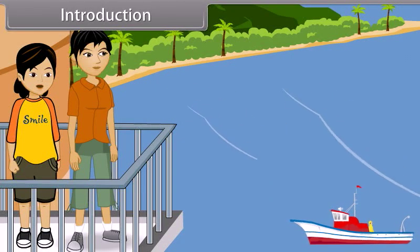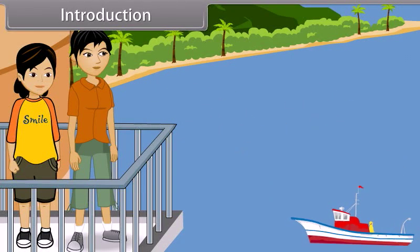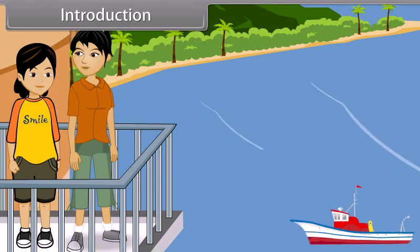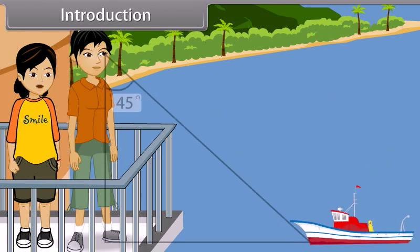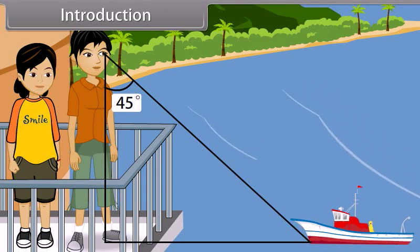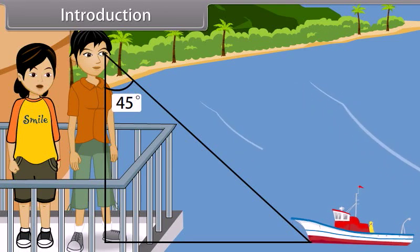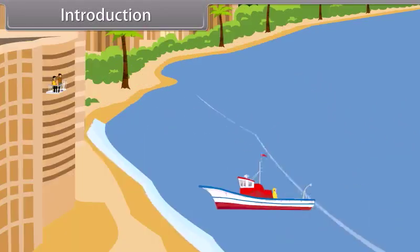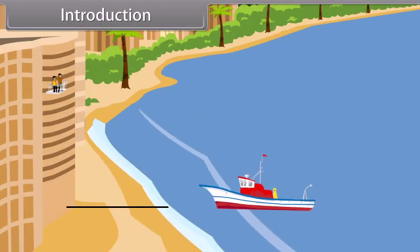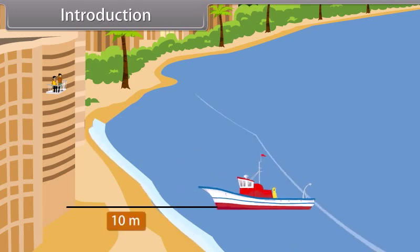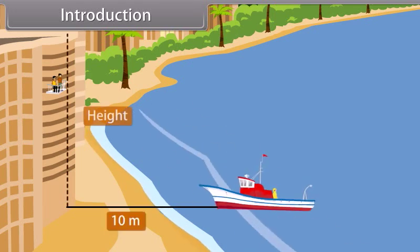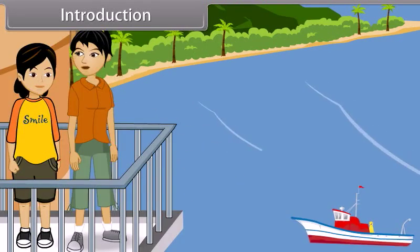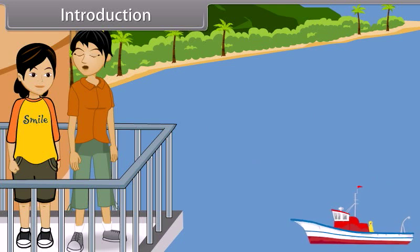Anvesha, are you looking at the ship? Yes, it is such a beautiful sight, see? You are right. Do you realize that your line of sight forms an angle of 45 degrees with the ground? You are right, Vedika. If I told you that the distance between our building and the ship is 10 meters, can you tell me the height of this building? Yes, sure.